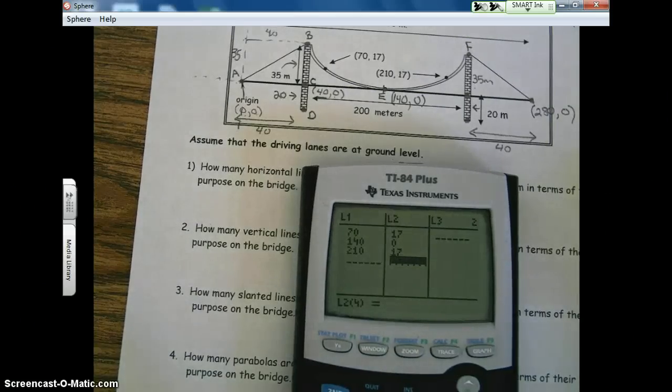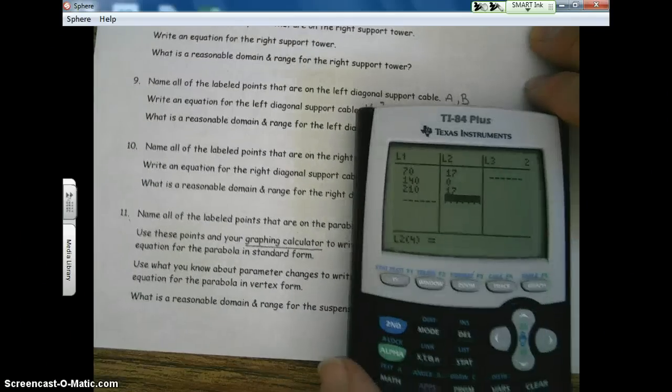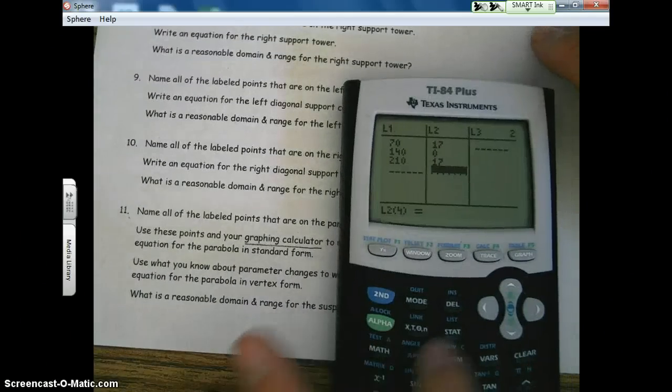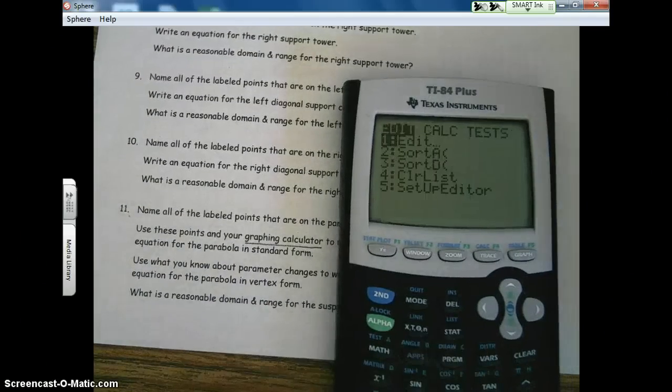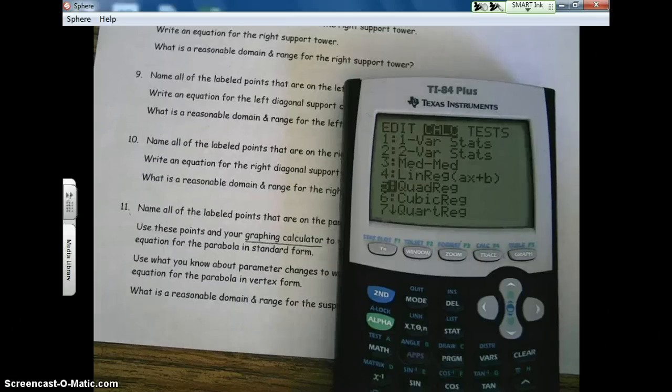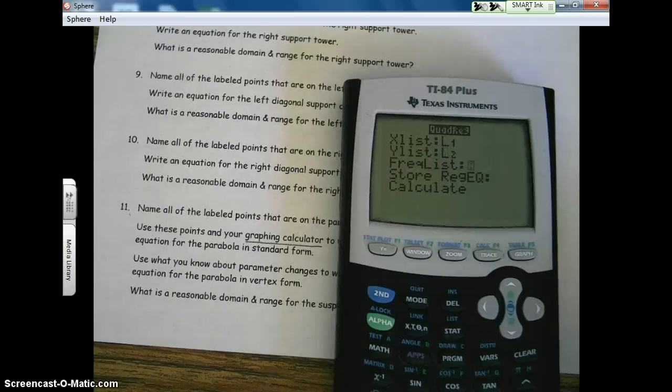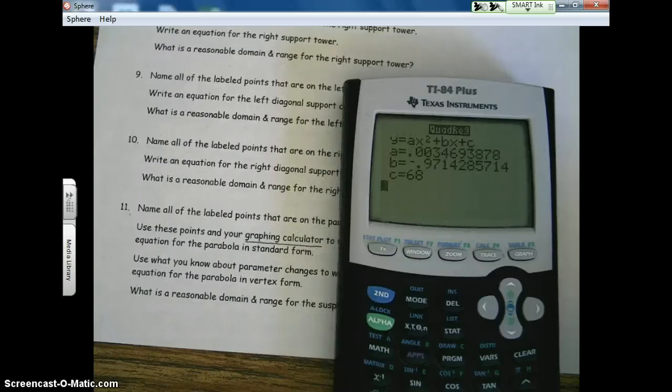Now to get the equation, in case you've forgotten how to do that, we're going to go ahead and go to stat, we're going to go to calculate, and we're going to do a quadratic regression. Number five. Quadratic regression. Enter. Enter. Enter. Enter.